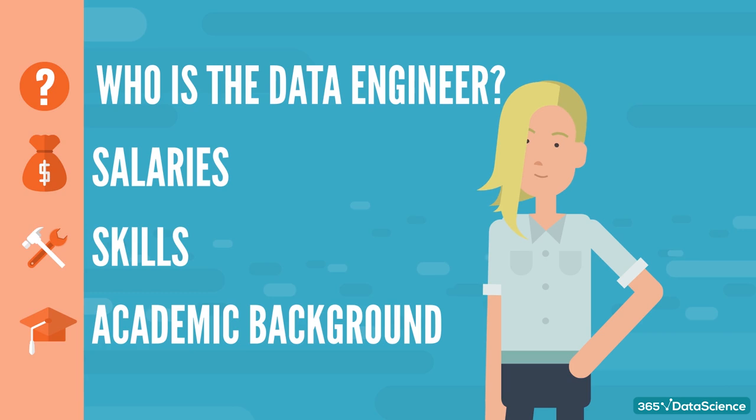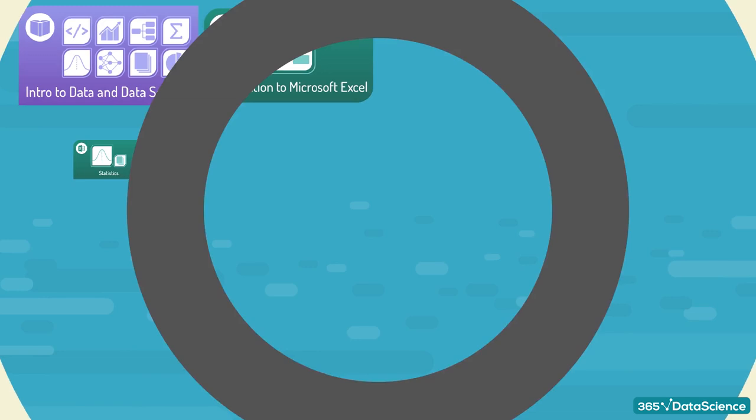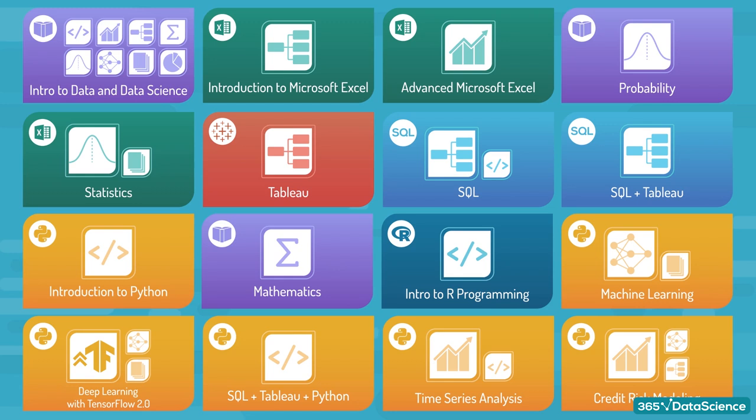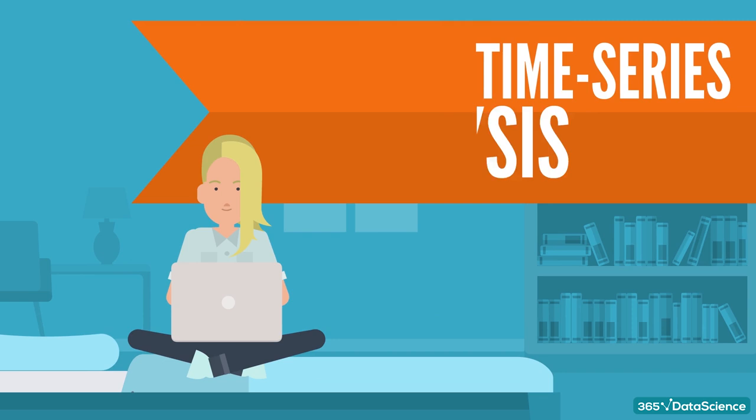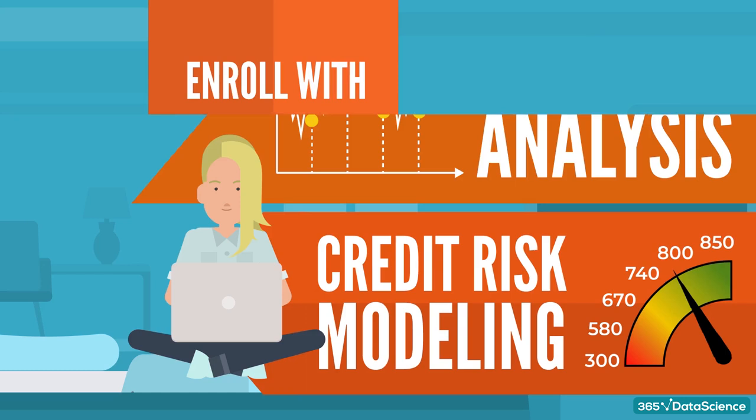But before we get started, we'd like to mention something else we've put together: a very comprehensive data science training. The 365 Data Science Program contains the full set of data science courses you need to develop the entire skill set for the job. It's completely beginner-friendly. For example, if you don't have any math or statistics knowledge, we'll teach you that first. And if you'd like to build a more specialized skill set, you can do that with courses on time series analysis, credit risk modeling, and more. If you'd like to explore this further or enroll using a 20% discount, there's a link in the description you can check out.